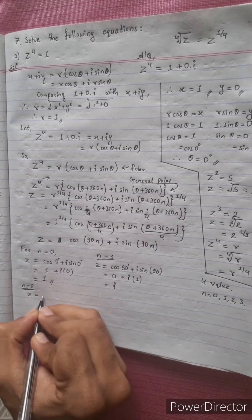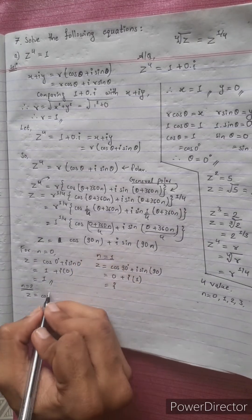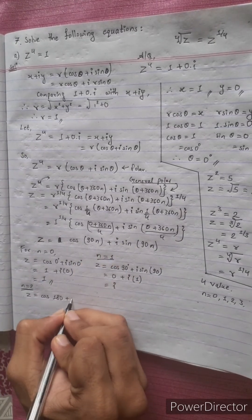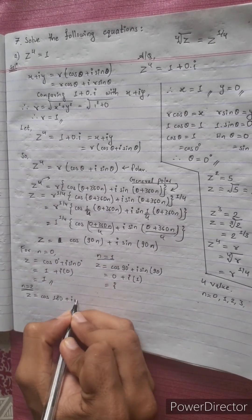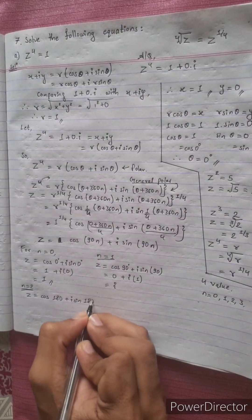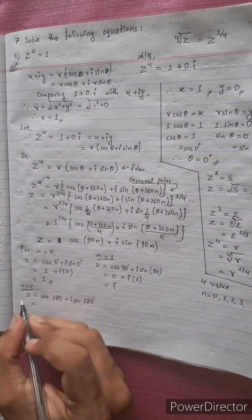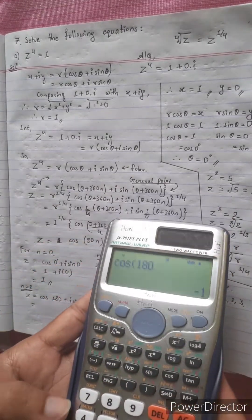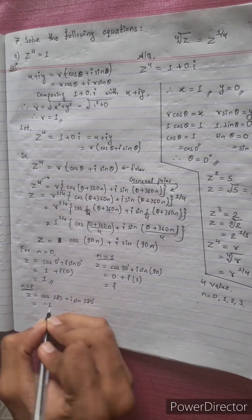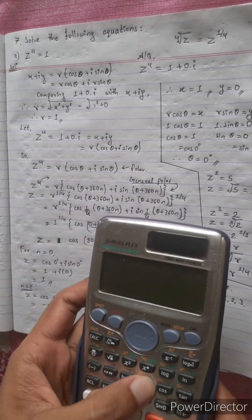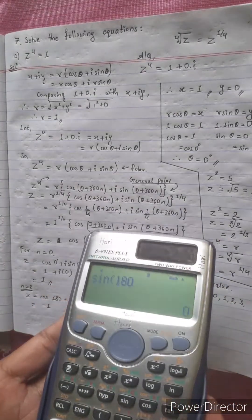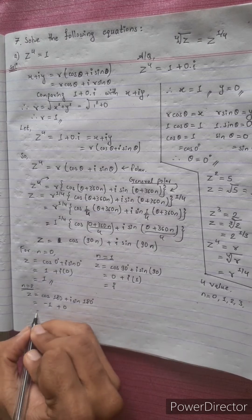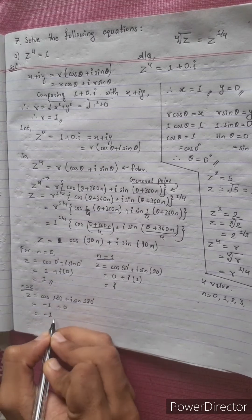When n equals 2: z equals cos(90 times 2) plus i sin(90 times 2), that is cos 180 plus i sin 180, which gives minus 1 plus i times 0, so z equals minus 1.